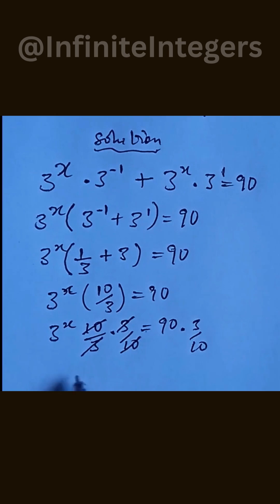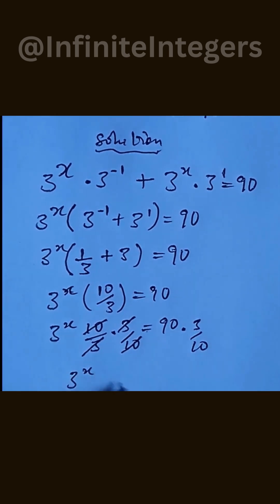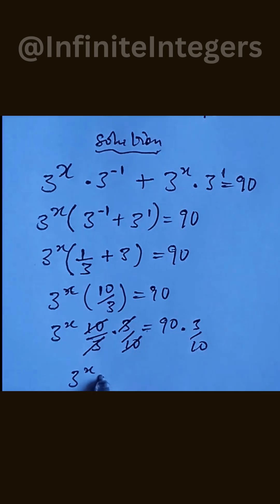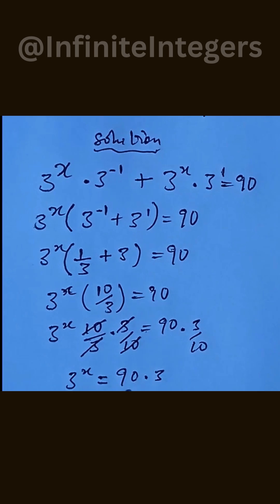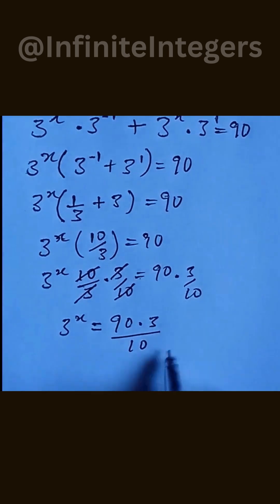And we are going to be left with 3 to the power of x isolated at the left hand side, that will be equal to 90 multiplied by 3 over 10. Having got to this stage, then we can cancel out.